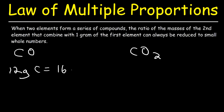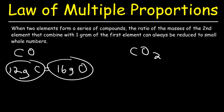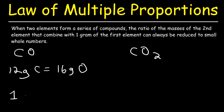In carbon monoxide, 12 grams of carbon combine with 16 grams of oxygen. The first element is carbon and the second element is oxygen. We want the first element to have a mass of 1, so we divide both numbers by 12. 12 divided by 12 is 1, and 16 divided by 12 is 1.33. So 1 gram of carbon combines with 1.33 grams of oxygen in carbon monoxide.